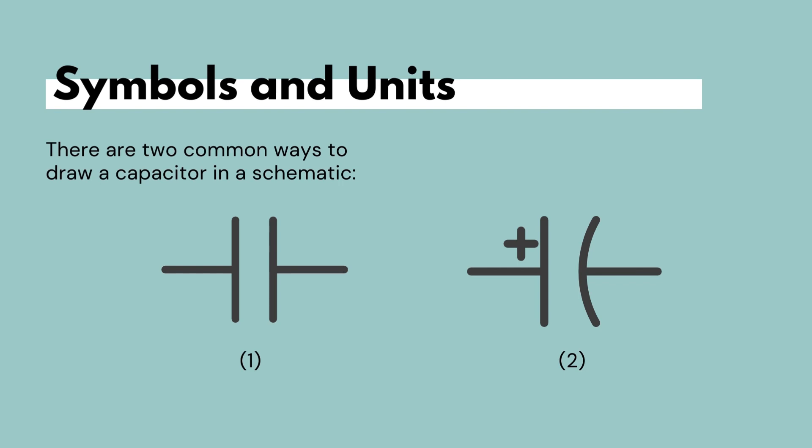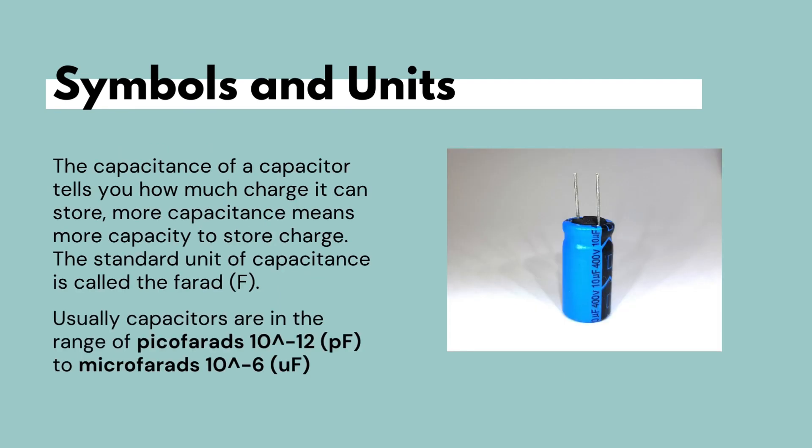But what is farads and what is the unit for capacitance? Each capacitor is built to have a specific amount of capacitance. And the capacitance of a capacitor is how much charge it can store. More capacitance means more capacity to store charge. And the standard unit of capacitance is called farads, which is abbreviated by the letter F.